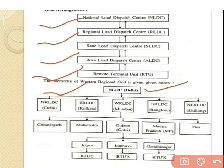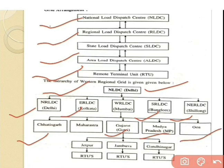In the figure, the first is the National Load Dispatch Center with its main branch in Delhi. Then come the Northern, Eastern, Western, Southern, and North-Eastern Regional Load Dispatch Centers, with branches at Delhi, Kolkata, Mumbai, Bangalore, and Shillong respectively. Under the Western region, individual branches include Chhattisgarh, Maharashtra, Gujarat, Madhya Pradesh, and Goa. We belong to Gujarat, which has RTUs located at Jetpur, Jambuva, Gandhinagar, and different areas — all covered under the national load dispatch center network.